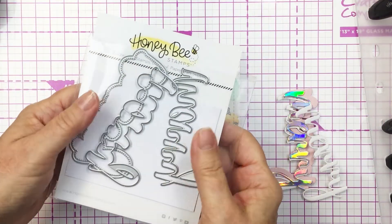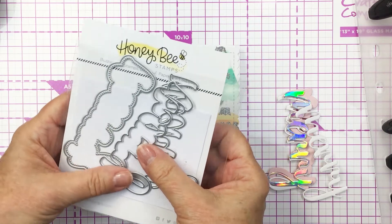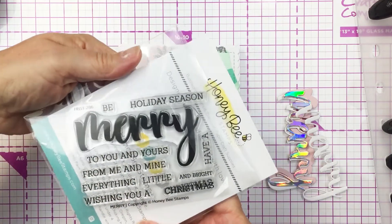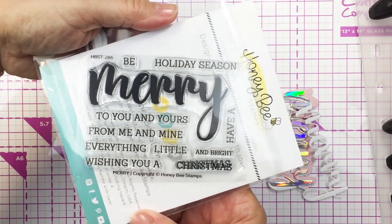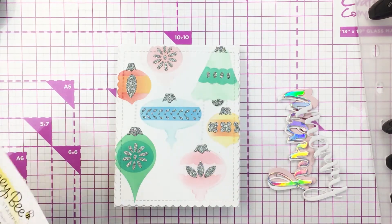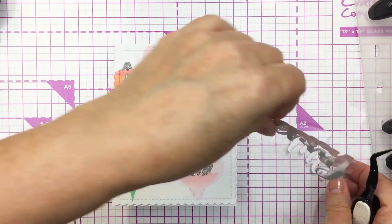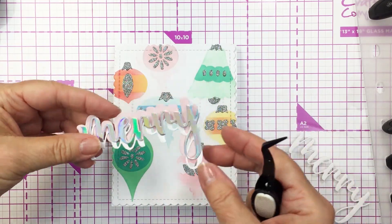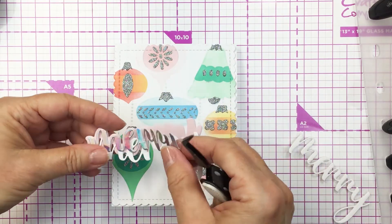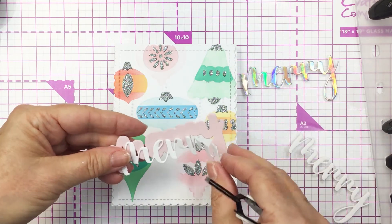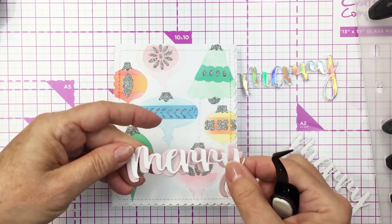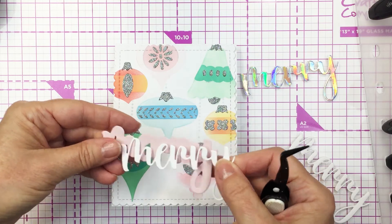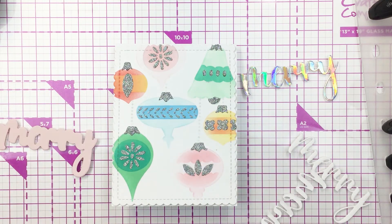Now I'm also going to be using the merry buzzword, and this is the merry coordinating stamp and die. I just love this, I thought this was a perfect buzzword for this particular card. What I did was I cut the word merry from some iridescent, or I should say holographic cardstock, as well as some white cardstock, and then I cut the outline from some really pretty light pink cardstock. I thought that would look really nice with this card.